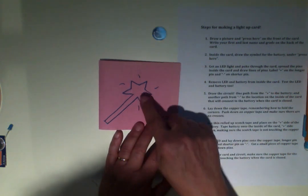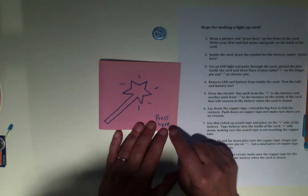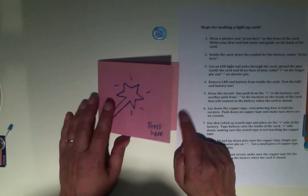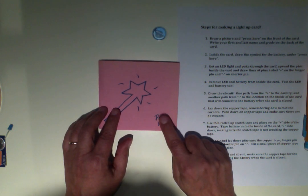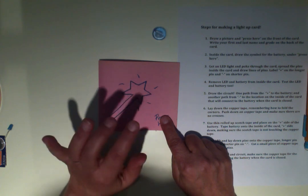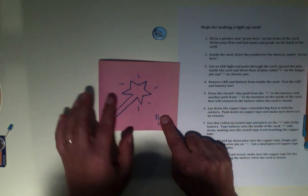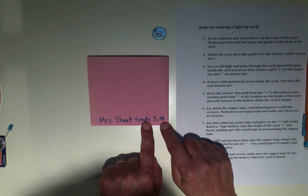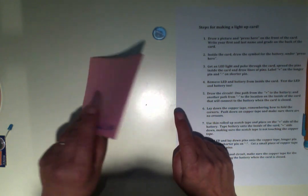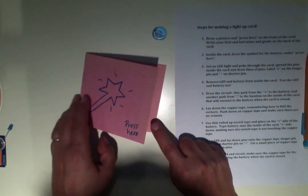So number one, draw the picture and press here. I'm going to help somebody light up the card by pressing on this and the light should come on. Also really important, make sure you have your name and grade. First name and last name.